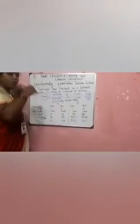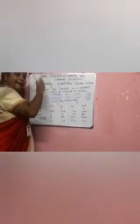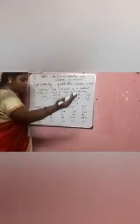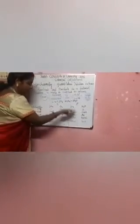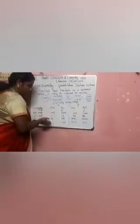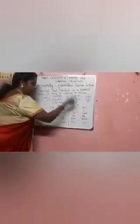Next is the volume-volume relationship, where both reactant and product are expressed in volume. The volume-volume relationship follows the same approach — 1 mole corresponds to the values according to the stoichiometric numbers.